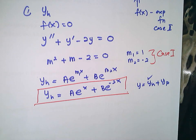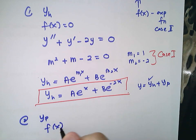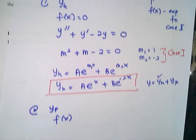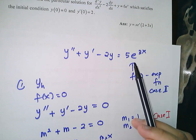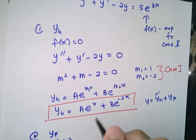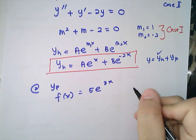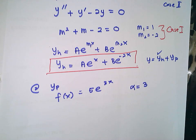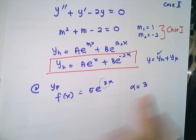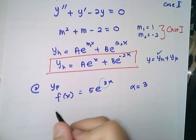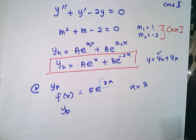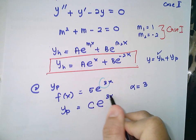To find yp, you need to know what your f(x) is. Looking at the differential equation, the right-hand side is f(x) = 5e^(3x). Identify alpha based on this f(x) — your alpha is equal to 3, taken from the exponent. Since f(x) is an exponential function, we suggest yp must also be an exponential function: yp = Ce^(3x), because alpha equals 3.